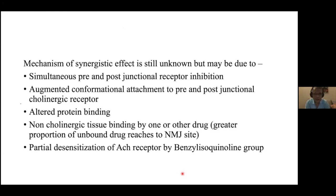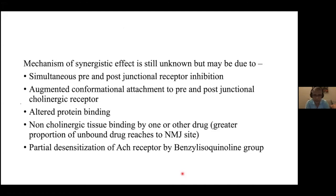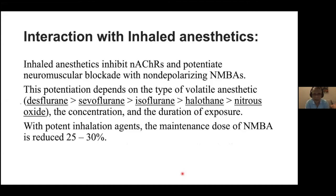The synergistic response occurs because pre- and post-junctional receptors are simultaneously inhibited — aminosteroids inhibit post-junctional receptors while isoquinolines affect both pre- and post-junctional receptors, with augmented conformational attachment, altered protein binding, and partial desensitization of acetylcholine receptors. Inhaled anesthetics inhibit nicotinic receptors and potentiate non-depolarizing neuromuscular blockade. Potentiation is highest with desflurane, then sevoflurane, isoflurane, halothane, and nitrous oxide.